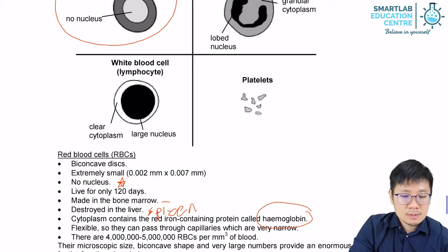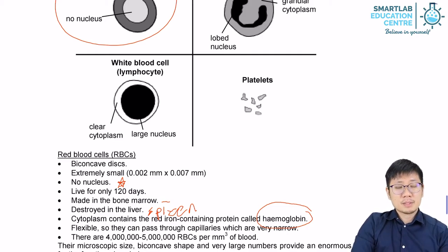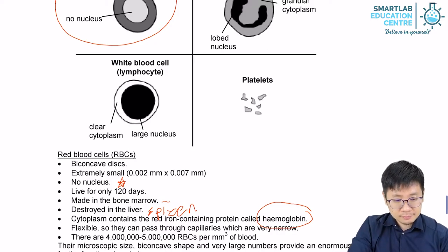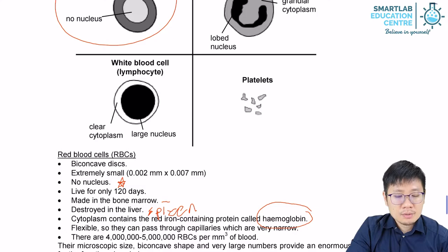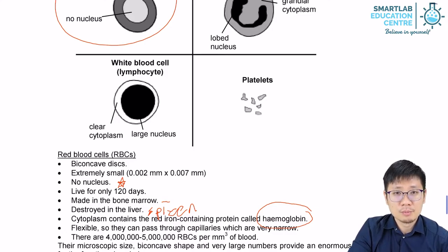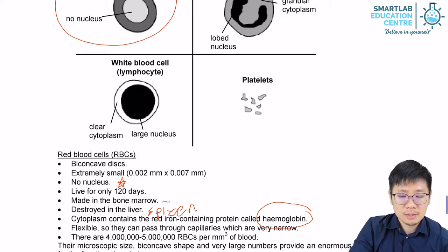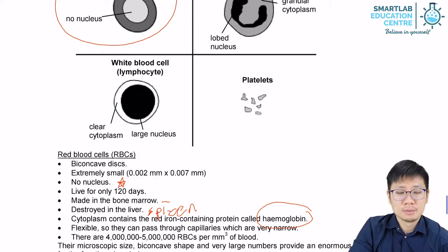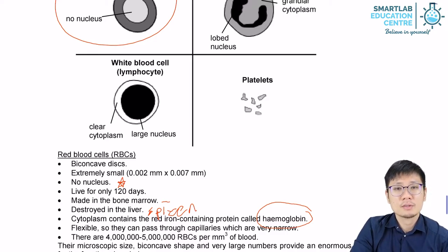Roughly speaking, there are about 4 million to 5 million red blood cells per millimetre cube of blood. Given this very numerous nature, the microscopic size, the flexibility, and the fact that they are packed full of hemoglobin, red blood cells are very well adapted to their main function — which is to carry oxygen from your lungs to every other part of your body and deliver them to your cells.